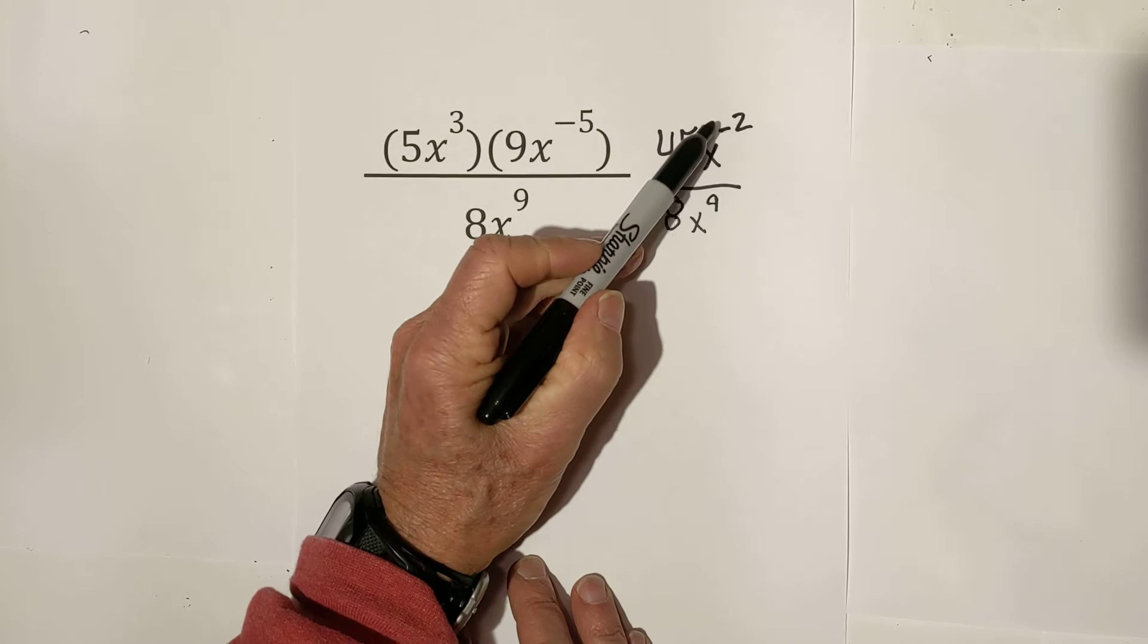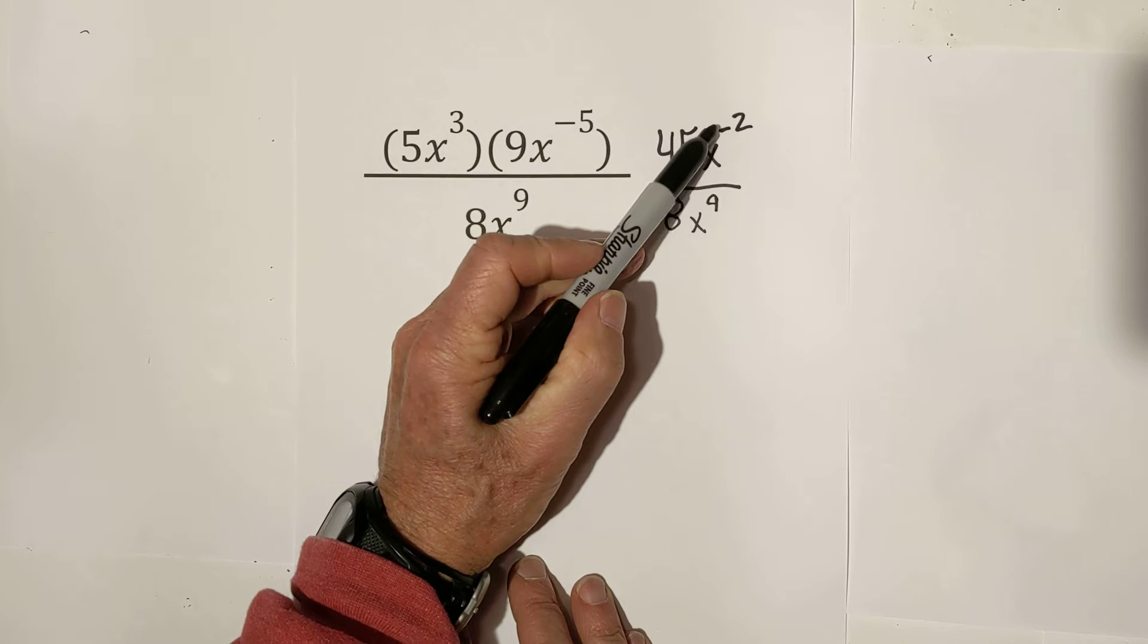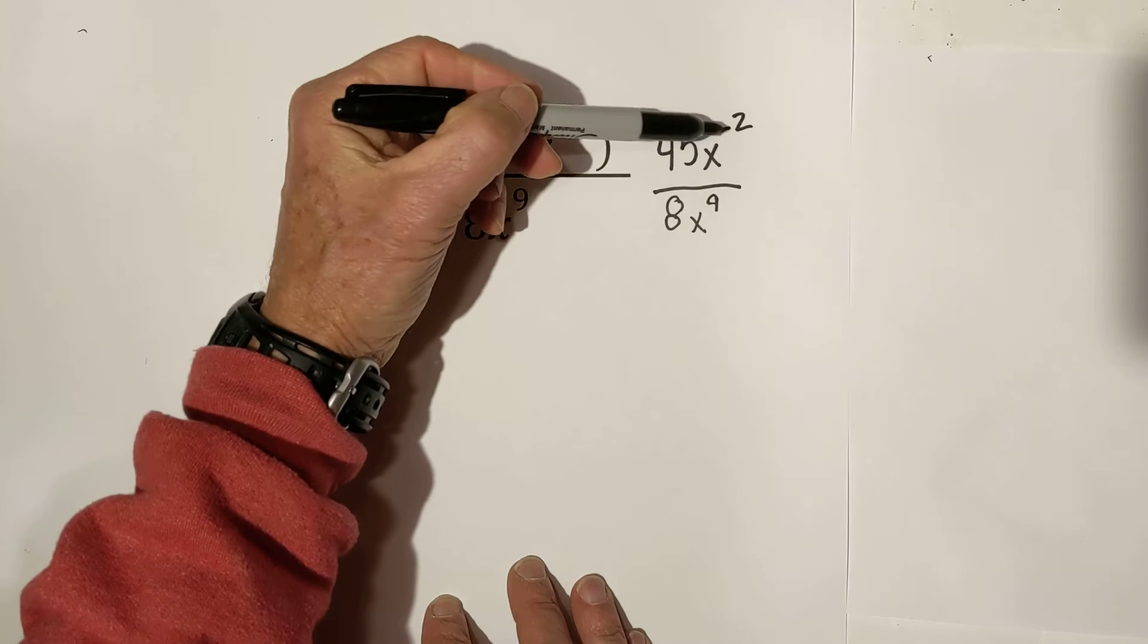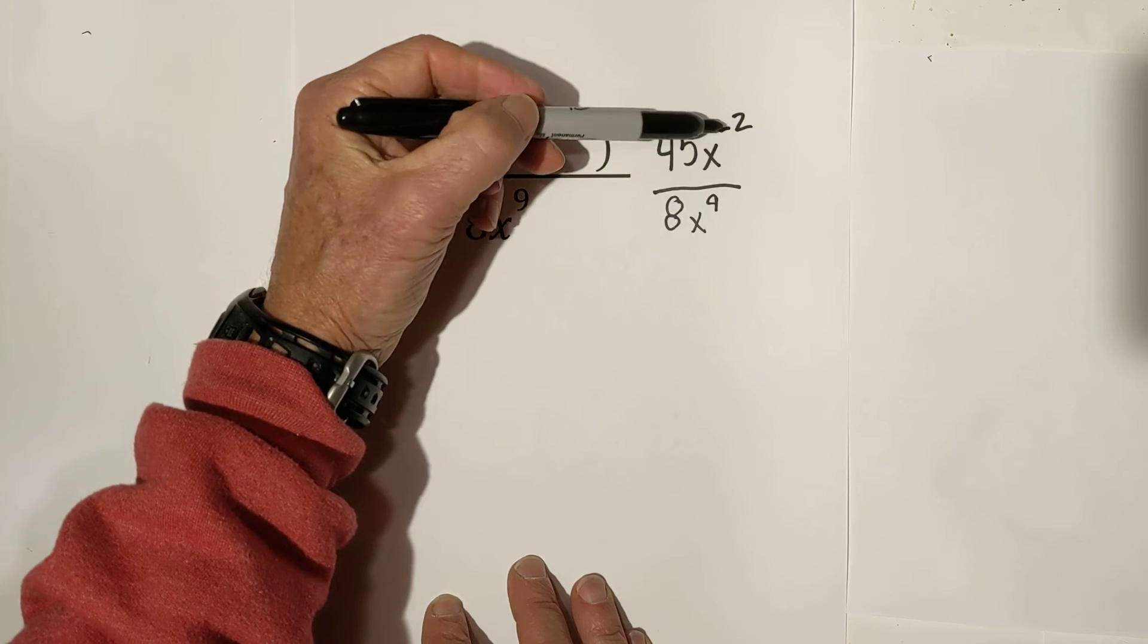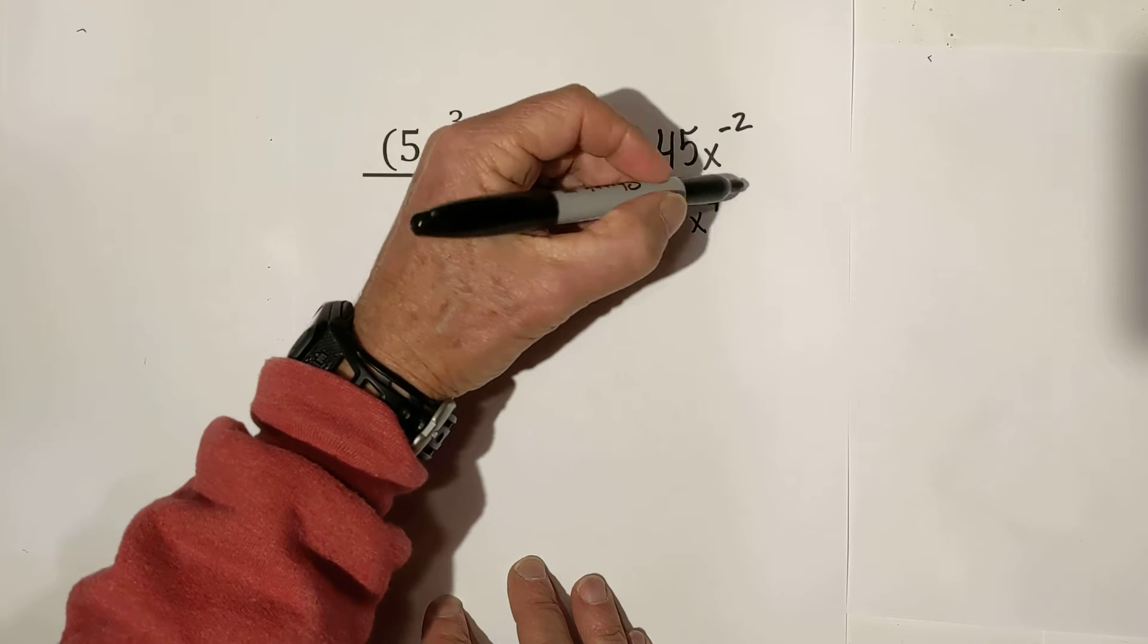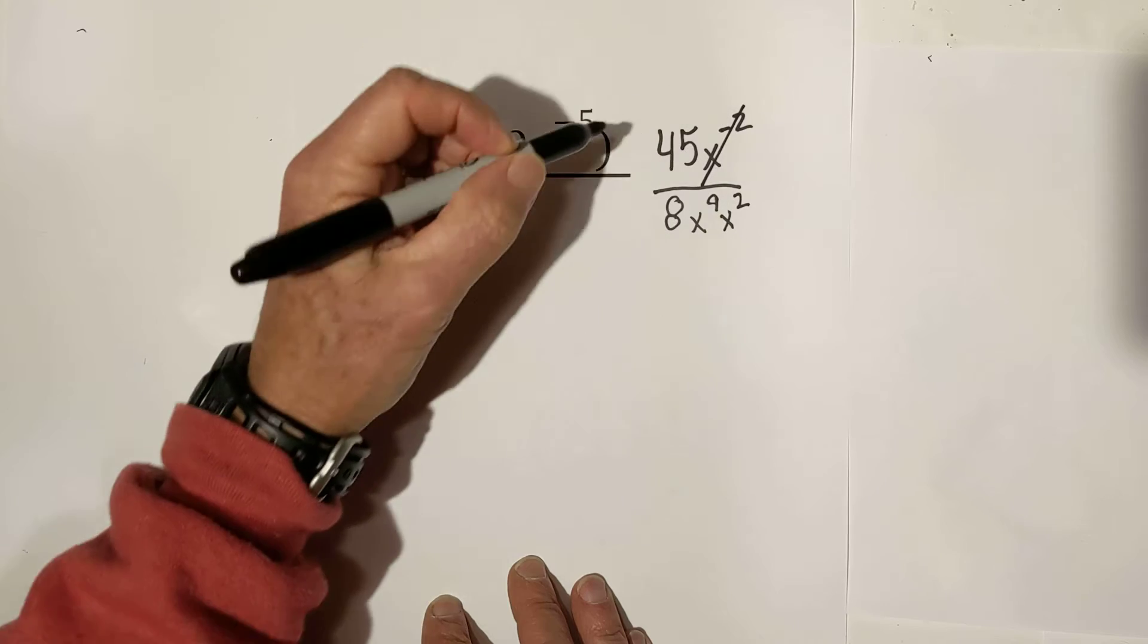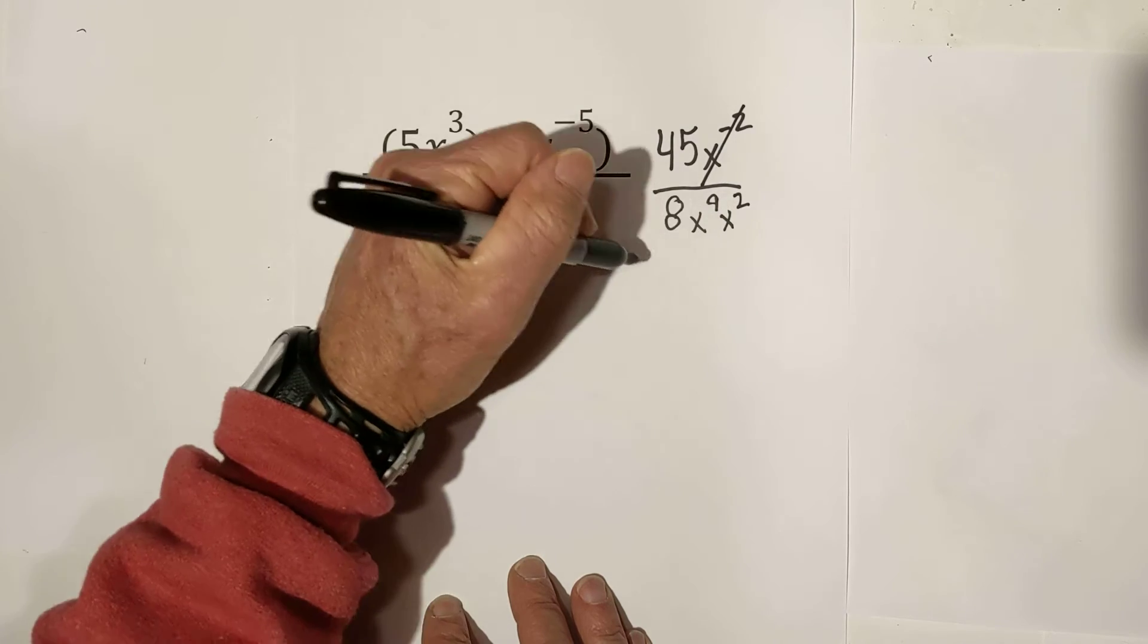Now, in order to get rid of the negative exponent, we need to move what it's attached to, to the bottom. So, we're going to have to move x to the positive 2. So, these cancel out.